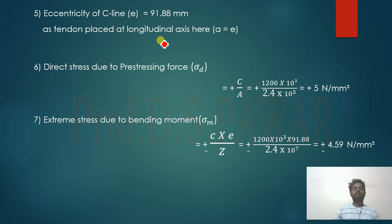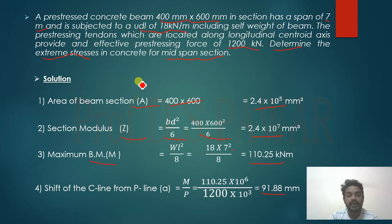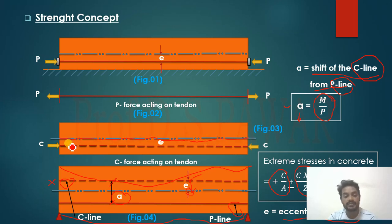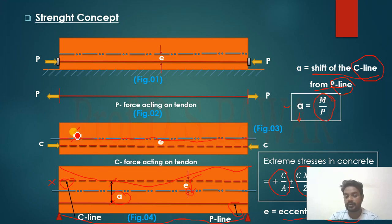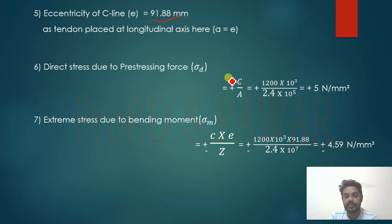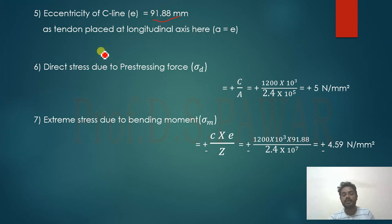Remember: the eccentricity 'e' of the C-line is to be taken as 91.88 mm. Why? Because the tendon is provided at the central axis — it has no eccentricity from the CG. So initially the C-line and P-line are at the same position. When calculating the eccentricity, we always measure from the center. Therefore, the eccentricity equals the shift: e = a = 91.88 mm.